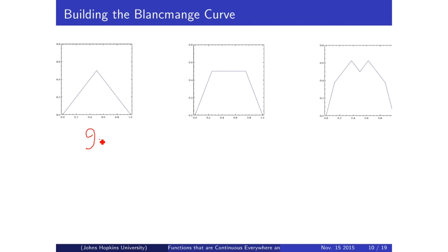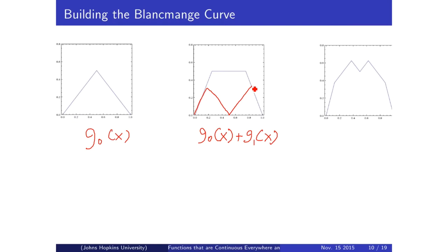We're going to start by adding up these iterations one at a time to build the Blancmange curve piece by piece. Starting with just g0 of x — one individual g of n, nothing added to it yet. Now we're going to take the values of g of 0 and add to it the second iteration, g of 1. By adding those values together, we get f of 1 — which actually looks like a trapezoid shape that is non-differentiable at two points.